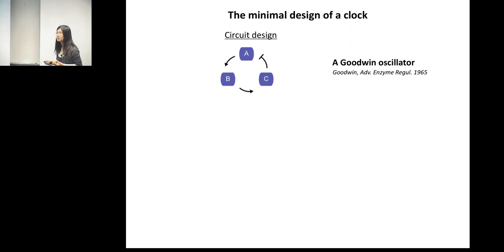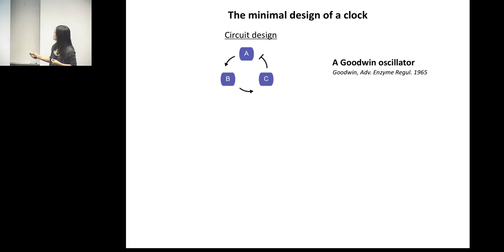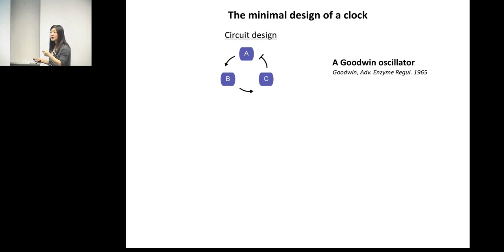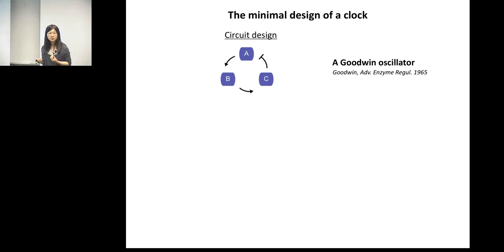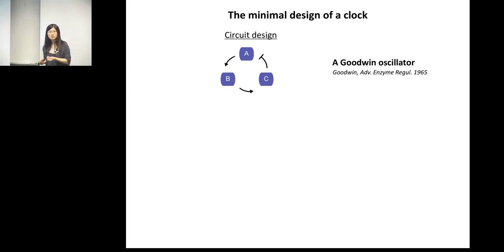In the Goodwin oscillator, there is a gene A that can transcribe into mRNA B, and B will translate into protein C. If C is the repressor of gene A itself, that forms a single negative feedback loop. The intermediate step B is also important because it provides sufficient time delay to help this negative feedback loop generate self-sustaining oscillations. Without enough time delay, the system would simply dampen into a stable steady state.